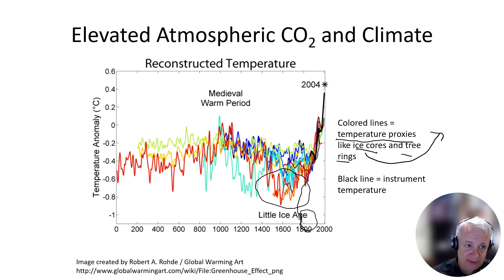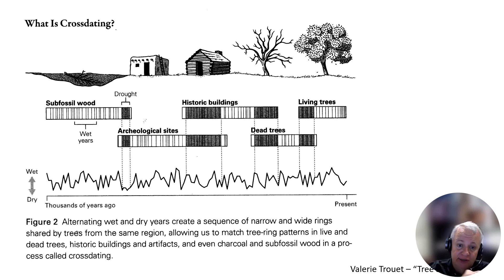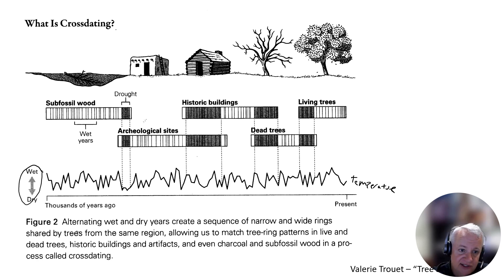We can also use tree rings as proxies for temperature — that's pretty cool. This is a nice diagram from Valerie Trouet's book Tree Story, showing how cross dating of tree cores and use of tree rings can allow us to look back into the past to understand weather patterns. This particular graph talks about wet and dry conditions — basically precipitation — but we can do the same in certain locations with temperature. We develop relationships between the widths of tree rings and weather conditions: when it's wetter, tree rings are wide; when it's drier, they're narrower. Same thing with temperature — tree ring width varies with temperature as well.